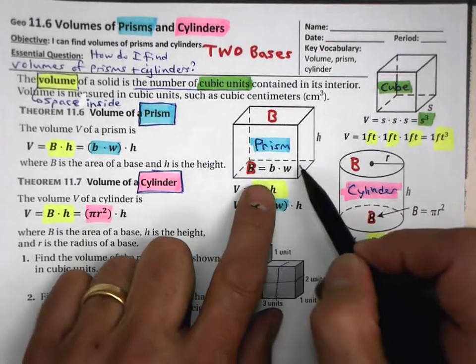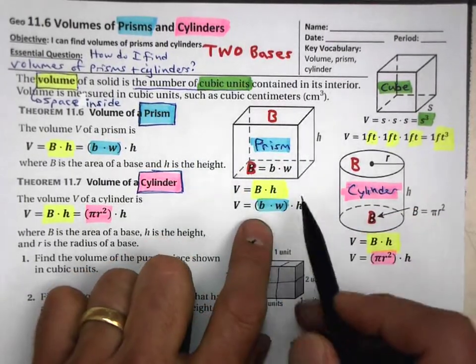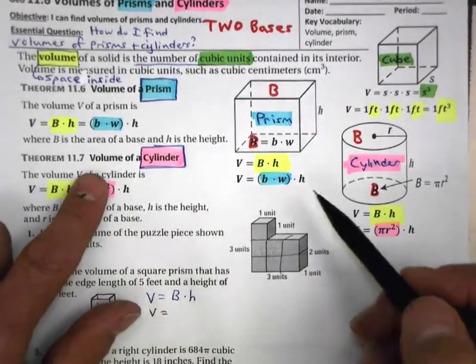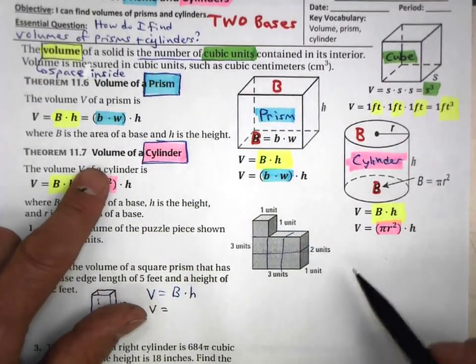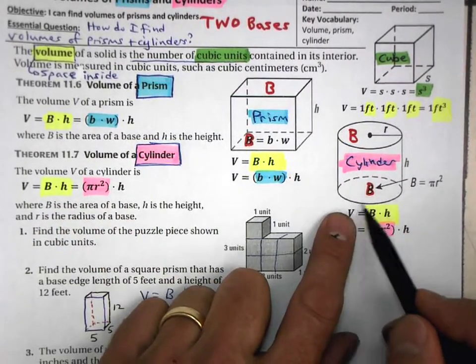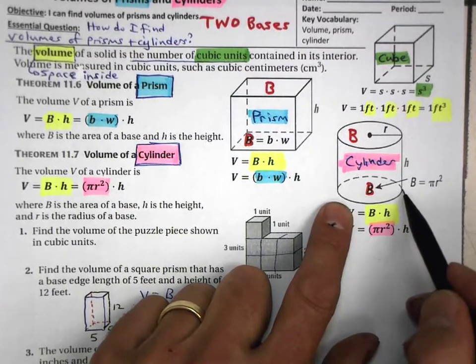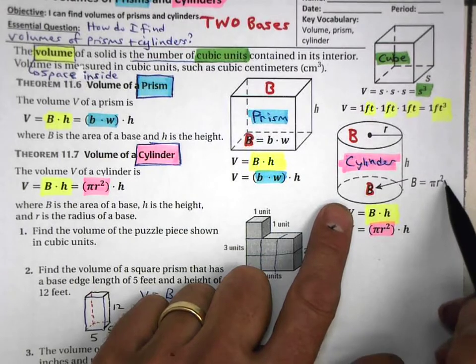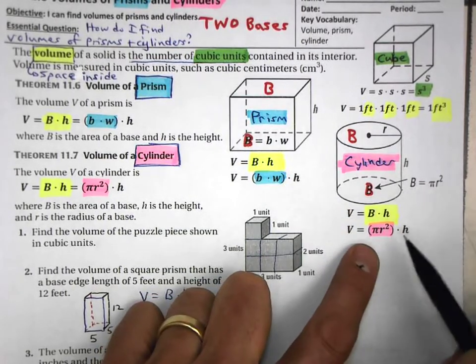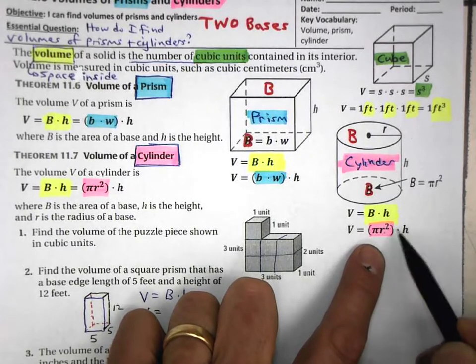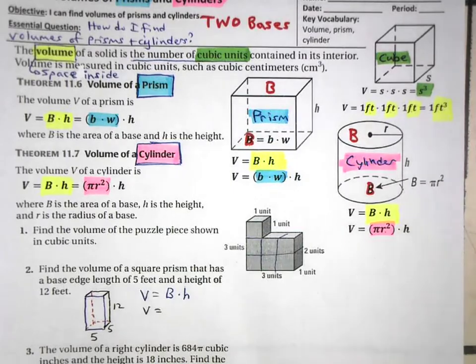So you find the area of the base, which is capital B, and then you multiply it times the height. Okay. For a cylinder, same exact concept. Find the area of the base. In this case, the base, though, is a circle. And you will remember that the area of the circle is pi r squared. And so for the area of the base, you plug in pi r squared, and then multiply that times your height.